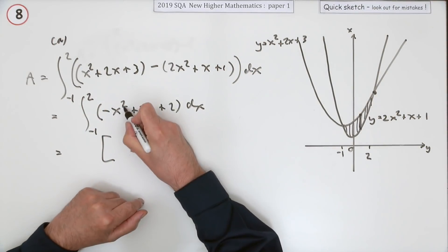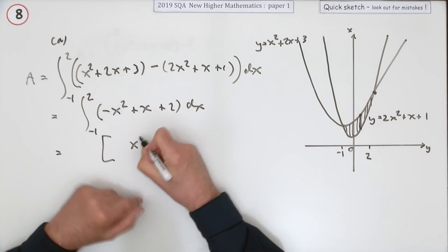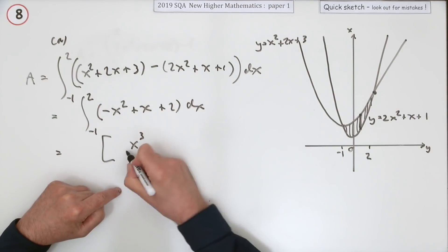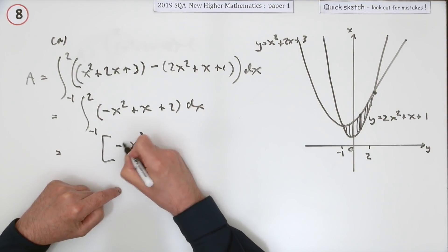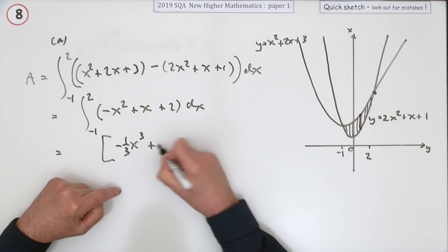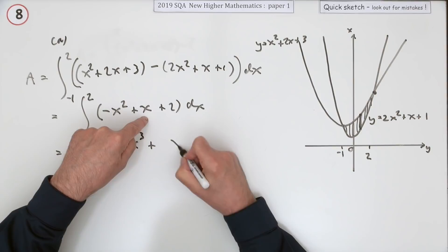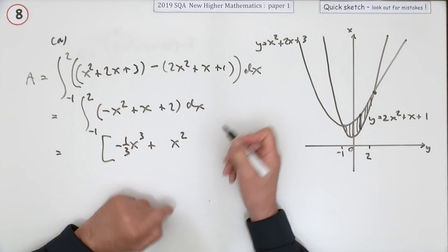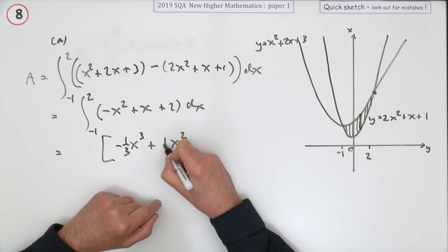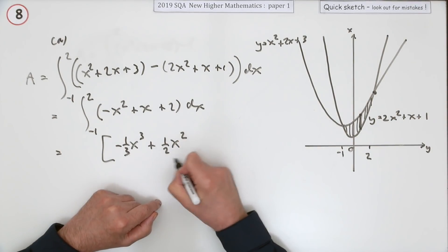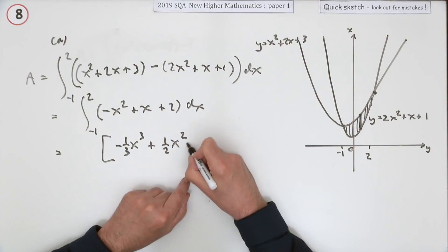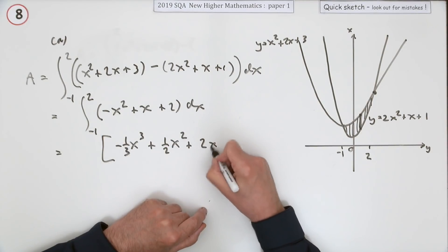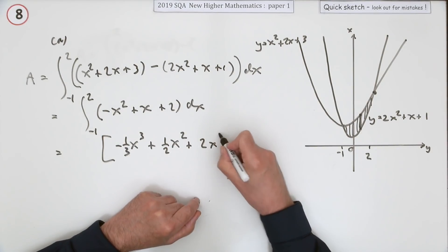Now integrate: add one to the power, up to 3, divide by the power — so negative x cubed over 3 or negative a third of it. Next term: add one to the power, up to 2, divide by that power — so x squared over 2 or a half of it. And if it's a constant term, it goes back to the linear one: 2x.